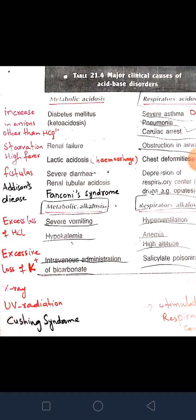Hypokalemia — decrease in potassium — leads to metabolic alkalosis. When potassium is decreased, to maintain electrical neutrality there is more reabsorption of sodium, since sodium and potassium work in compensation with each other. When plasma potassium decreases, sodium increases, and sodium also increases the level of bicarbonate ion forming the alkali reserve. Ultimately, hypokalemia leads to increase in bicarbonate ion, which is referred to as metabolic alkalosis.